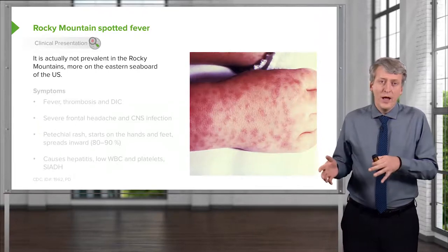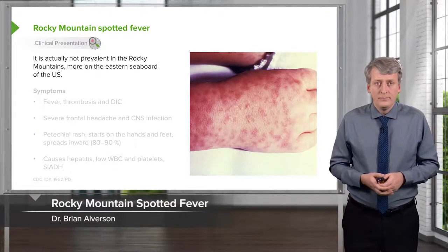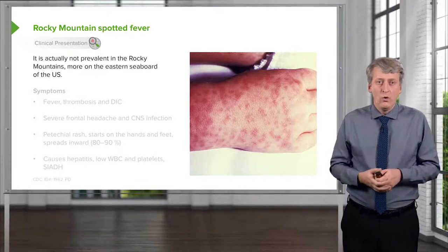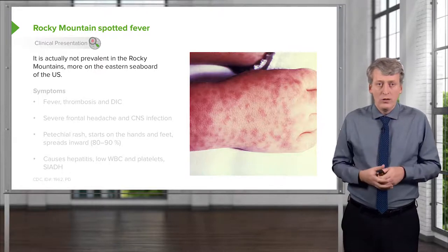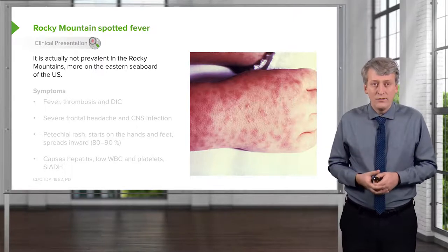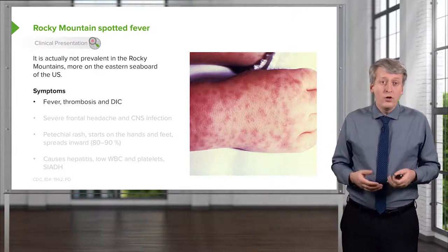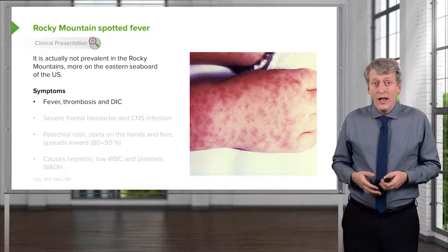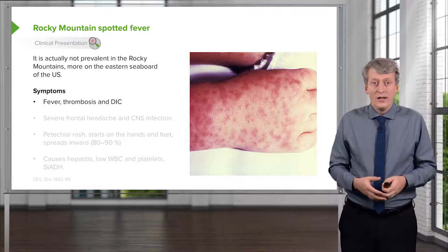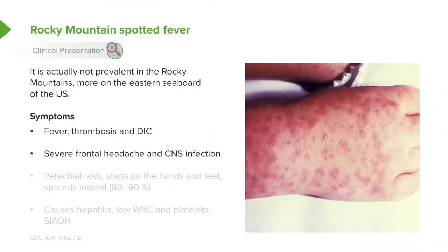Rocky Mountain spotted fever is not actually prevalent in the Rocky Mountains — it's perhaps a misnomer. It's really more found on the eastern seaboard of the United States, especially in the Carolinas. Symptoms include fever, thrombosis, and disseminated intravascular coagulation. These patients are sick and have a high mortality rate. They may complain of severe frontal headache or retroorbital eye pain, and they often have CNS involvement.